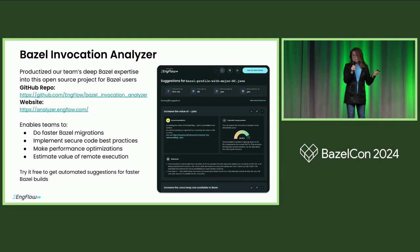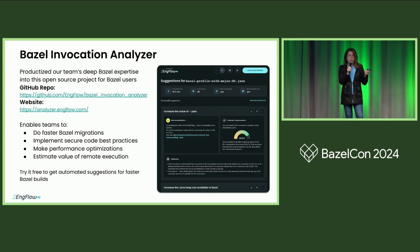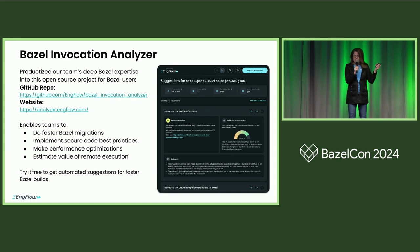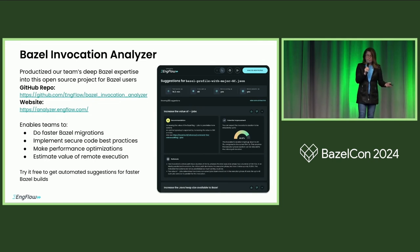You start by seeing what efficiencies you can get with our open source Bazel invocation analyzer, fully integrated into our UI for additional insights on every build. As you can see in this build, it can be 84% faster when you implement these specific recommendations. Faster builds, lower costs.